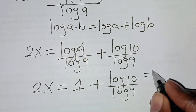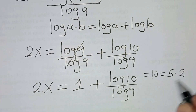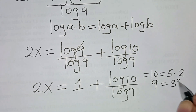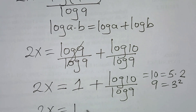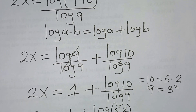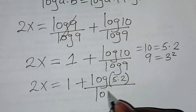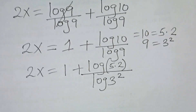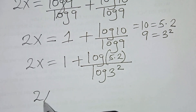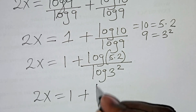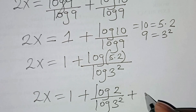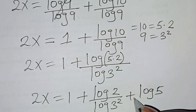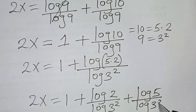We can express 10 as 5 multiplied by 2, and we can express 9 as 3 to the power 2. Substituting this, we'll have 2x is equal to 1 plus log(5 × 2) divided by log(3²). This gives us 2x is equal to 1 plus log 2 divided by log(3²) plus log 5 divided by log(3²).